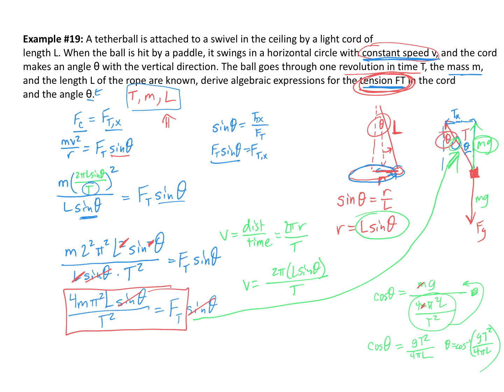Our final answer is theta equals the inverse cosine of gT² over 4π²L — solved in terms of g, T, and L, where g and pi are universal constants. Hopefully that was helpful in talking through the process. We were looking to substitute for the things we don't have and continuing with that idea of setting equations equal to each other. Hopefully that video is helpful — you can watch another one if you'd like.